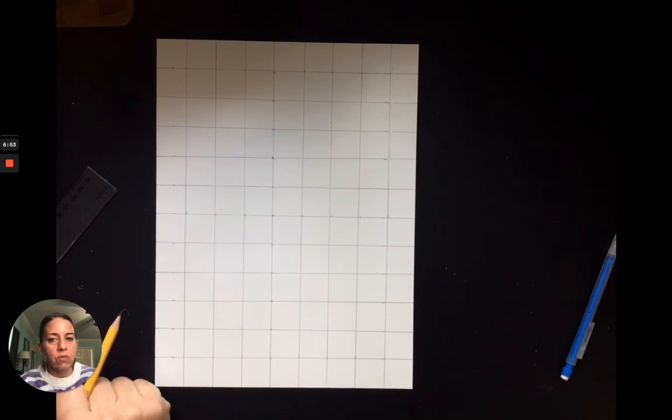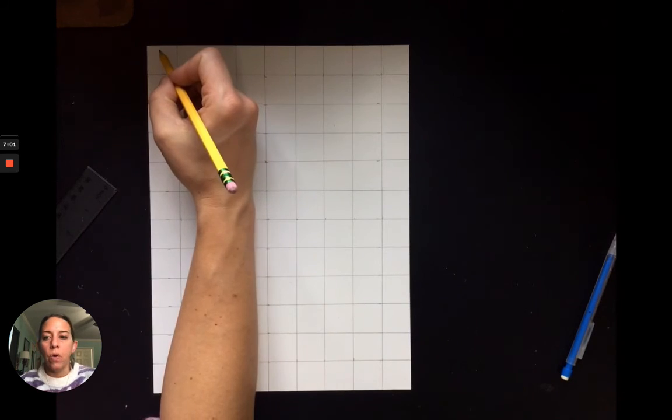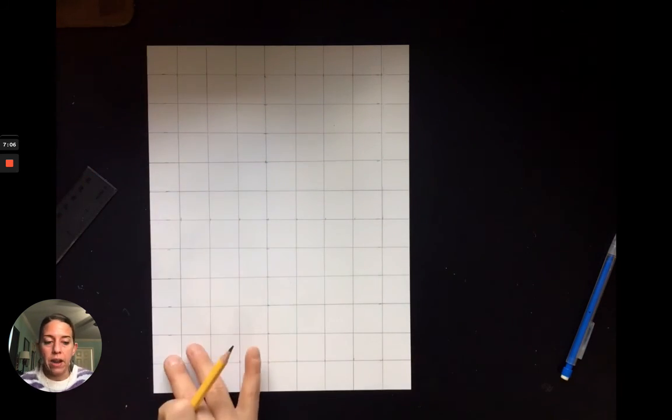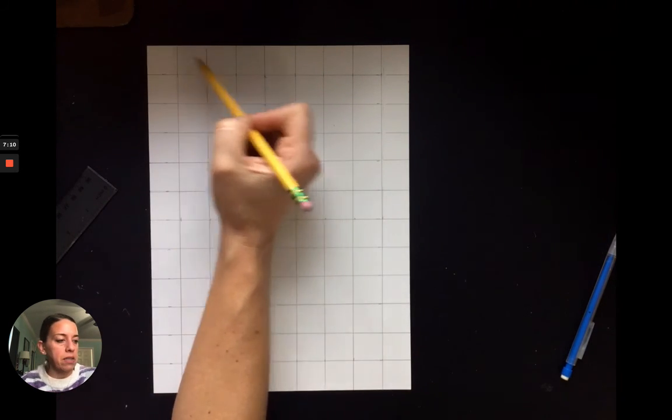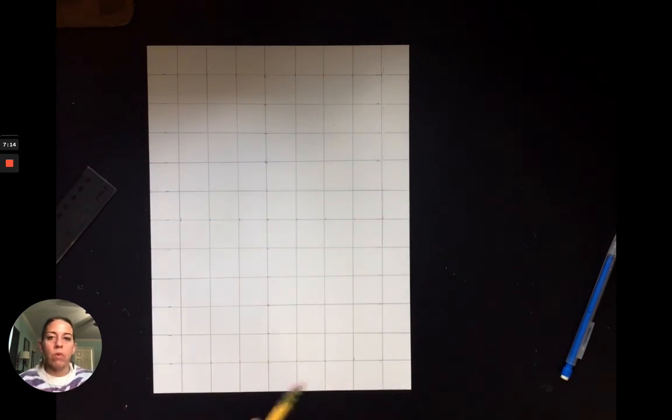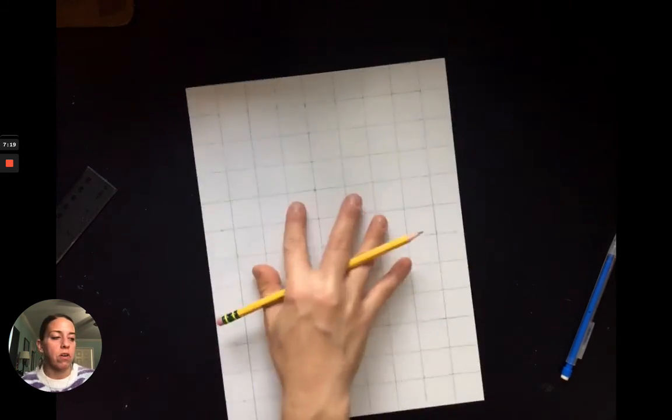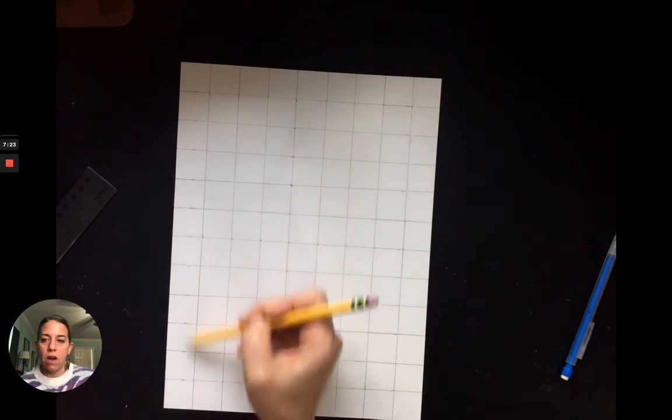So once your grid is ready to go, the next thing that you want to do is ask yourself, do I need my grid to be horizontal or do I need it to be vertical? And then you're going to want to label your letters and your numbers according to your picture that you should now have in your possession. So, you know, A, B, C, D, E, F, G, H, and then 1, 2, 3, 4, 5, 6, 7, 8, 9, 10, whichever way. It depends on whether you're going horizontal or vertical, but your numbers go tiny up here and down here on the side.